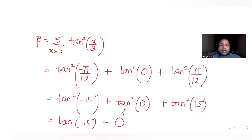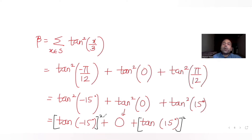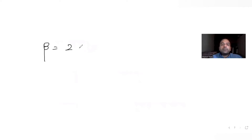We know tan²(0) = 0. Also, tan(-15°) and tan(15°) have the same magnitude but opposite signs; after squaring, both are positive with the same value. So β = 2·tan²(15°).